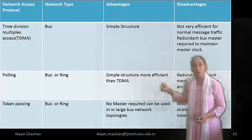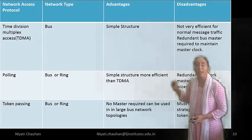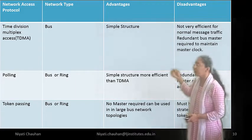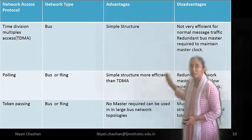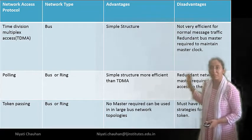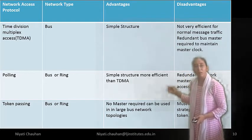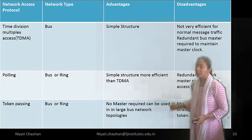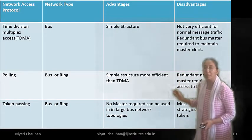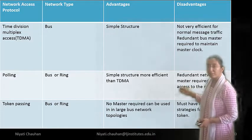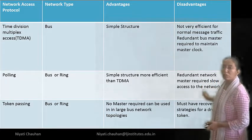In network access protocols, we discuss different protocols. First: Time Division Multiple Access (TDMA), network type — bus. Advantage: simple structure and ease of use. Disadvantage: not very efficient for normal message traffic; requires a redundant bus and a master to maintain the master clock. Second protocol: polling, using bus or ring network. Advantage: simple structure, more efficient than TDMA. Disadvantage: redundant network, master required, slow access to the network.